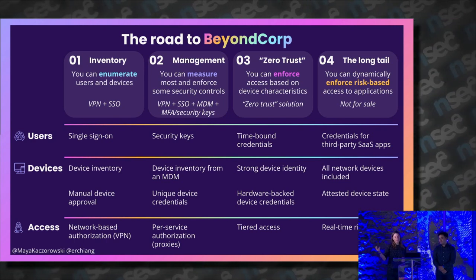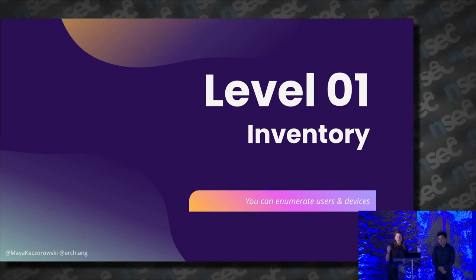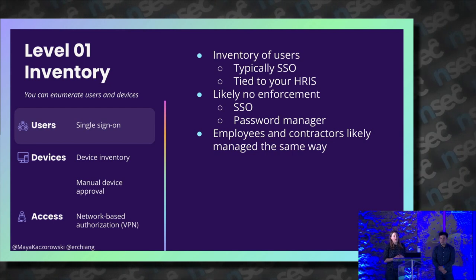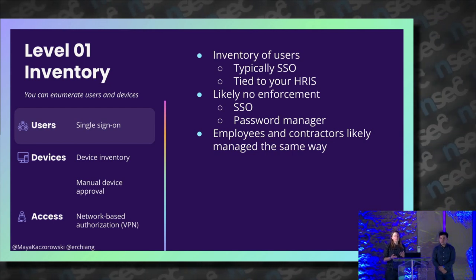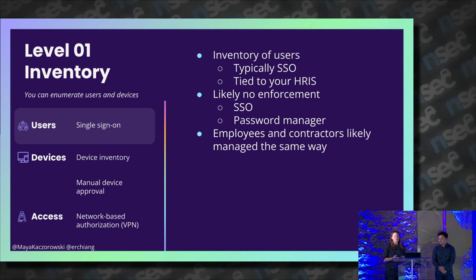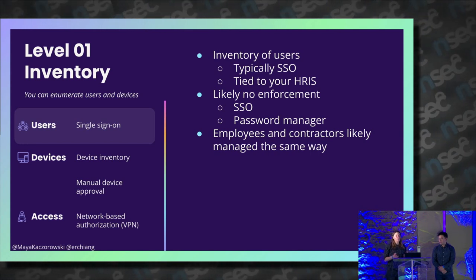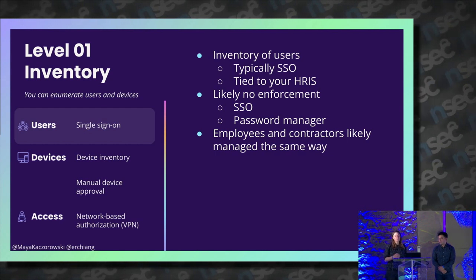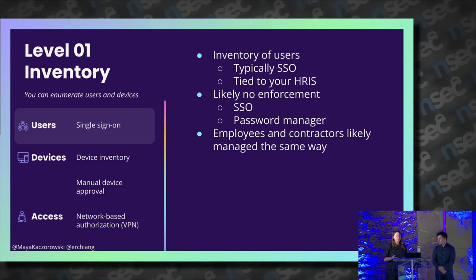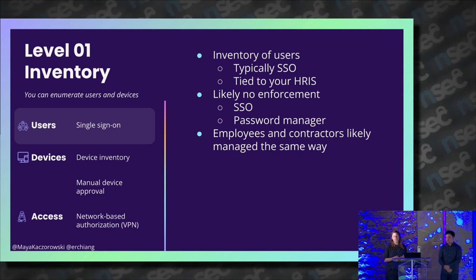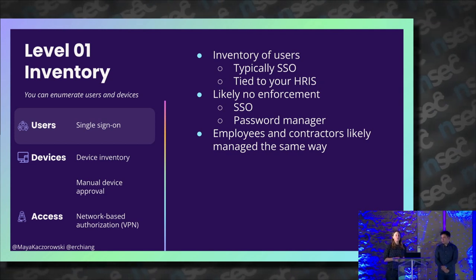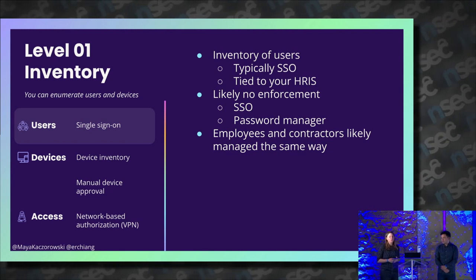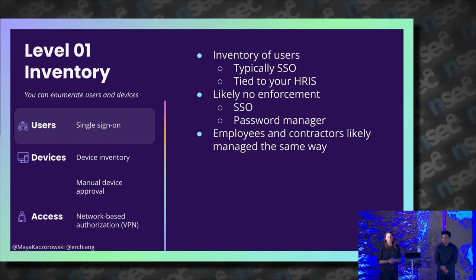So we're going to go through each level. Level 1 is about having an inventory of your users and devices. To inventory users accessing applications in your environment, the easiest thing is to use a single sign-on identity provider — SSO. It's also a great, simple security improvement for your organization. This is typically tied to your HR information system, so when a new employee joins, changes teams, or leaves, their identity and access to business applications can easily be updated.